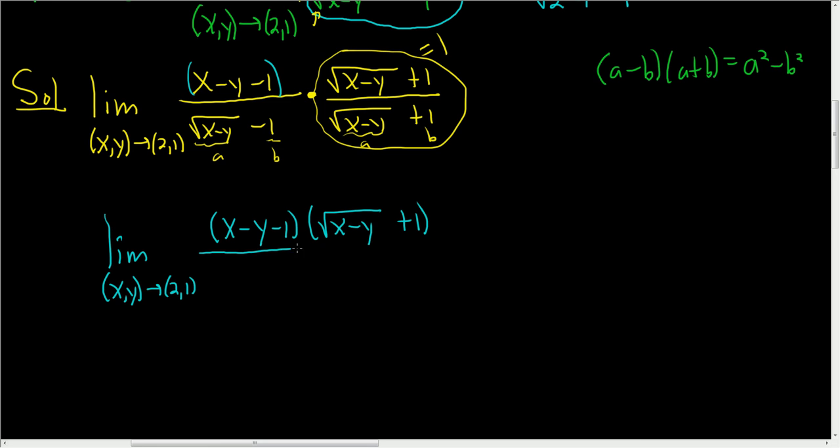In the denominator that's where the magic happens. So it's a minus b times a plus b. So we square the a. That's going to leave us with x minus y minus, and then we square the 1. So simply 1. And there it is.